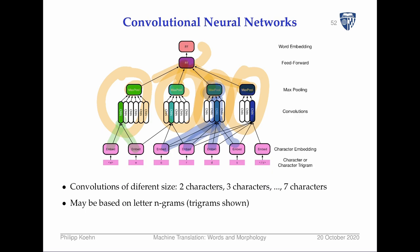That's all for today. The main practical takeaway is byte pair encoding, which you should be familiar with. Character-based models are still an open research frontier — they're arguably more principled than BPE, whose segmentation granularity seems arbitrary and requires a strange hyperparameter. However, character-based models are currently more complicated to deal with and haven't taken over yet. See you in the next lecture.